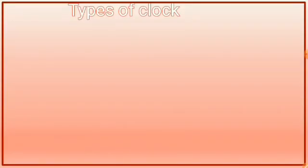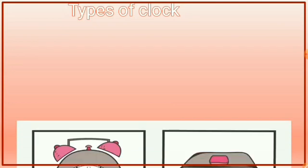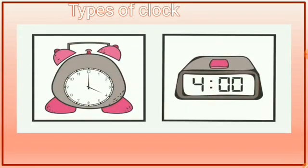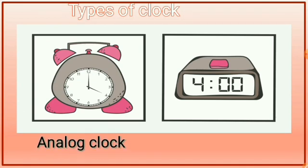So let's see what are the different types of clocks. This you have already done in your previous classes — just a small revision. On your screen if you see, there are two types of clocks. The first one is the analog clock, and the second one is known as the digital clock.